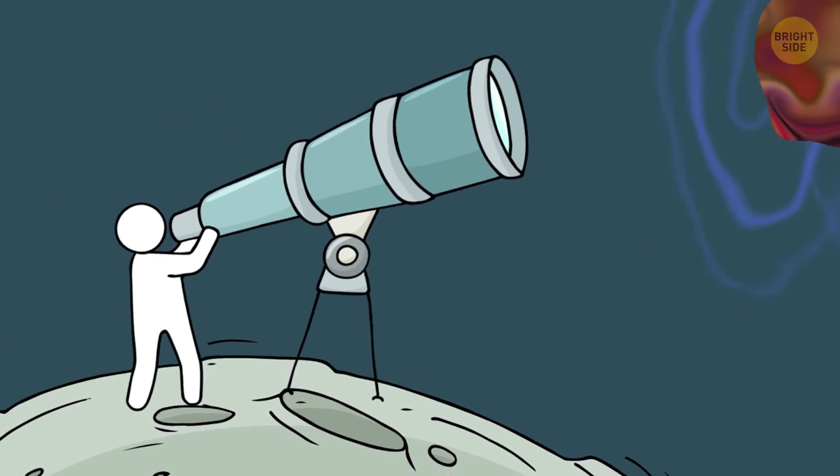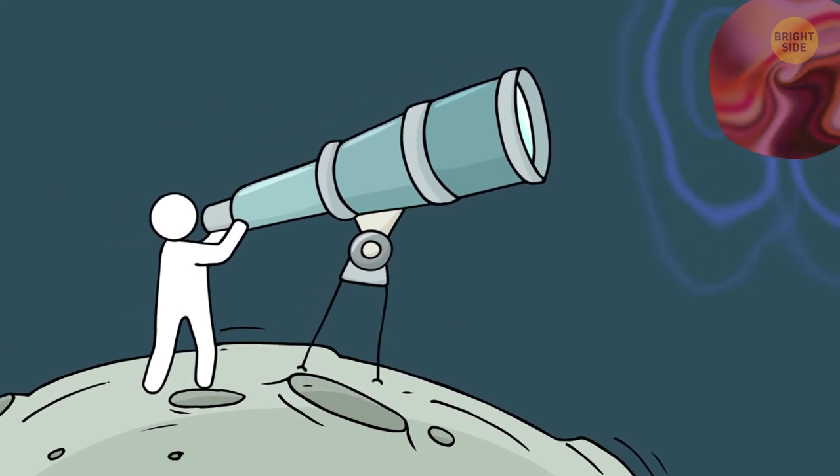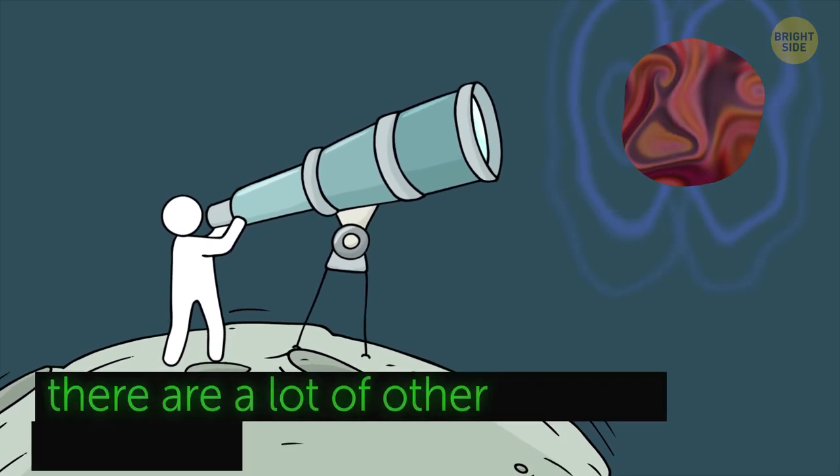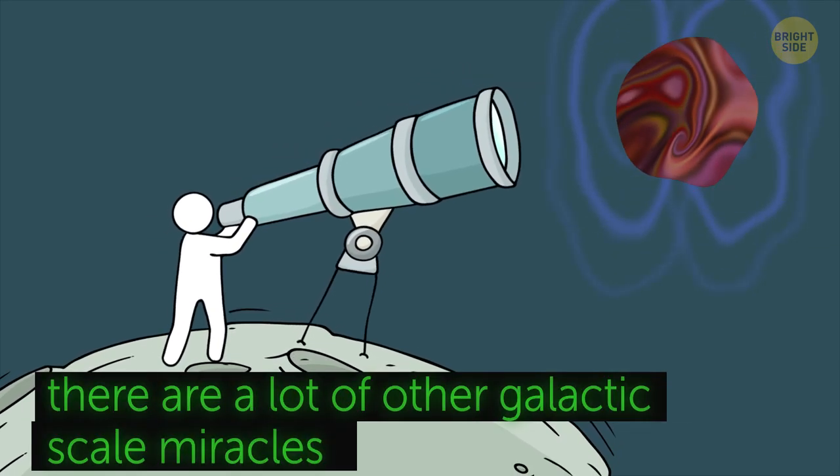Void galaxies may be the strangest type of galaxies in terms of their origin. But in the vast space of the universe, there are a lot of other galactic scale miracles. For example, there's one galaxy called the Sombrero Galaxy.